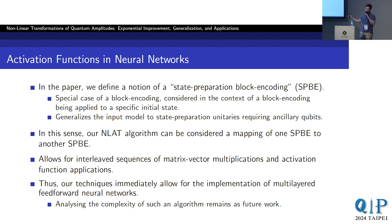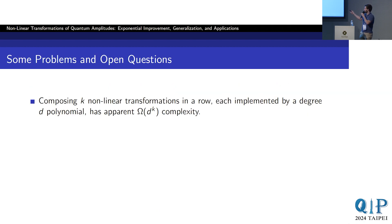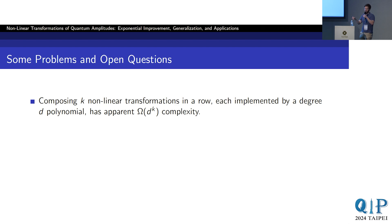Analyzing the complexity of such an algorithm remains as future work, and there is a problem you might immediately see. When you compose k nonlinear transformations in a row, each implemented by a degree-d polynomial, it seems to have d-to-the-k complexity. So this could work for shallow neural networks, but some more work to circumvent this complexity restriction might be required for deeper networks. The fundamental problem is that each time you use the output of one nonlinear transformation to define the next state preparation unitary, you add a multiplicative factor of k to the query complexity, which is where the exponential growth comes from.